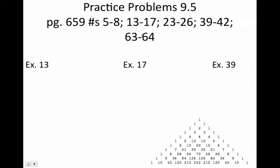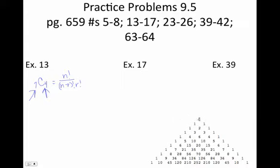Here is homework 9.5. I'm going to do a few of these with you. Number 13 asks us to evaluate 7 choose 4 using Pascal's triangle — without a calculator and without the factorial formula. So we say this is row 7, diagonal 4. Don't forget we start at row 0: 0, 1, 2, 3, 4, 5, 6, 7. That's the row we want.